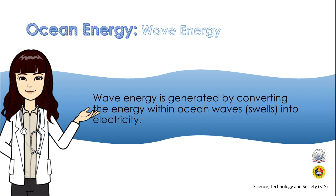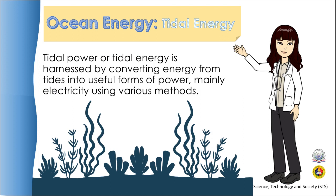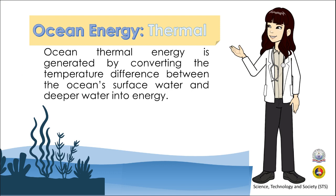Tidal power or tidal energy is harnessed by converting energy from tides into useful forms of power, mainly electricity, using various methods. Tidal energy technologies harvest the potential energy created by the height difference between high and low tides. Tidal stream or current technologies capture the kinetic energy of currents flowing in and out of tidal areas. Ocean mechanical energy uses the ebbs and flows of the tides to generate energy, which is created by the Earth's rotation and gravity from the moon. Ocean thermal energy converts the temperature difference between the ocean's surface water and deeper water into energy.